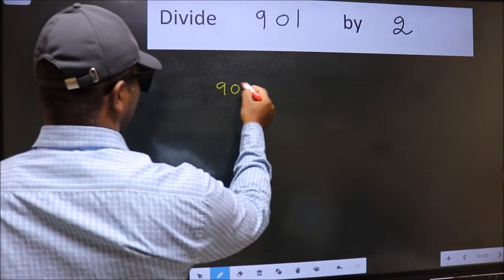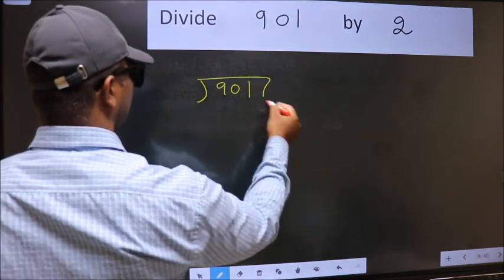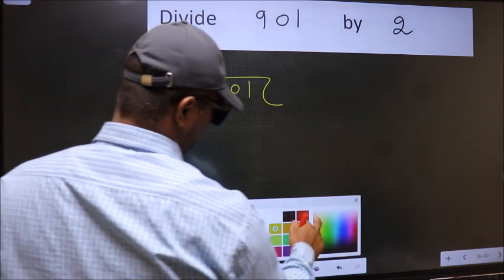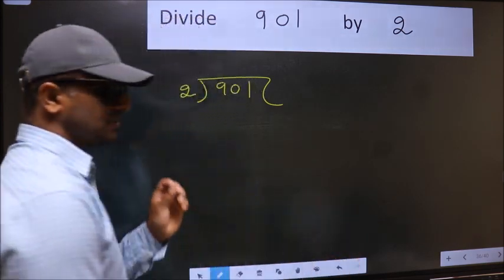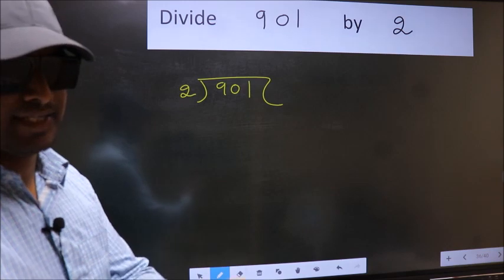9, 0, 1 and 2 here. This is your step 1. Next.